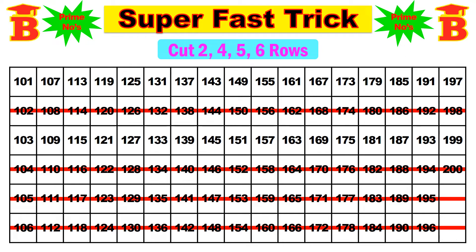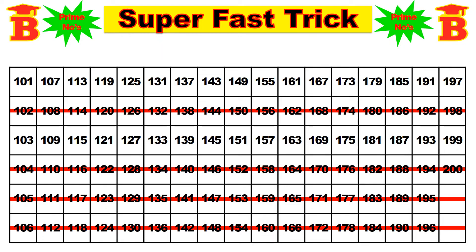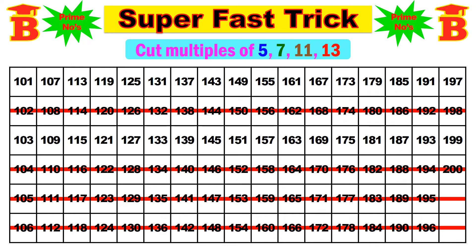Now we have only 2 rows left — that is the 1st row and 3rd row. Only in these 2 rows we have the prime numbers. For that there is only one condition: we have to cut the multiples of 5, 7, 11, and 13.